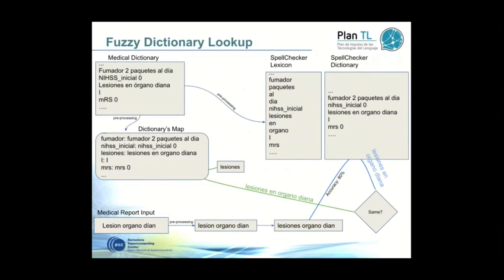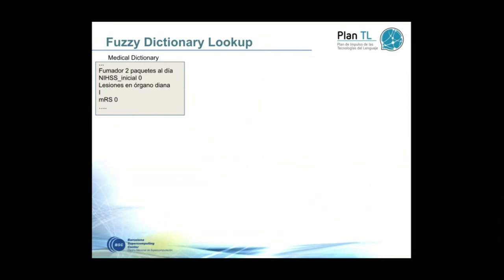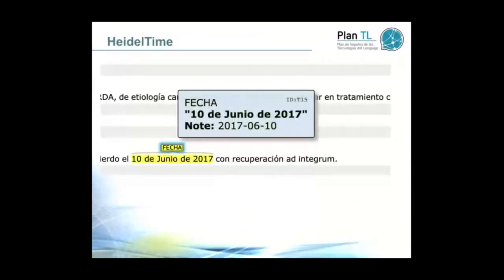Another question: HeidelTime — if I remember correctly, it can handle both German and English expressions. Does it have a setting for Spanish, or did you have to make modifications? The main change we made for Spanish was adding normalized versions of the patterns. We changed the grammar to produce this normalized output, with each temporal pattern normalized to a specific format in the notes. The grammar we added to HeidelTime is also available in our GitHub repository.